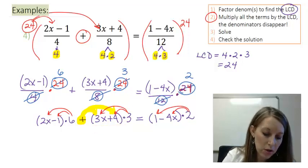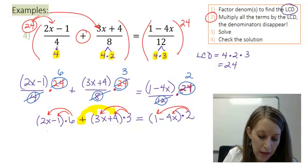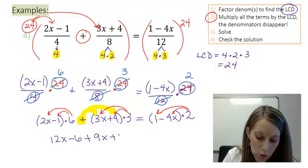Okay, so using this distribution, that gives me a 12x minus 6 plus a 9x plus 12 is equal to 2 minus 8x.